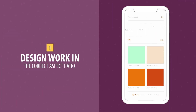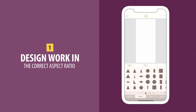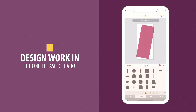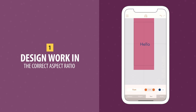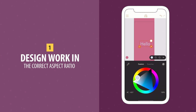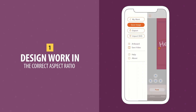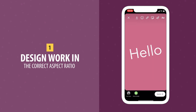Number 1. With Assembly you can design your composition in the correct aspect ratio for Instagram Stories, which is 16 by 9 vertical. Just head over to your canvas sizes and tap on device. This will mean there's no more re-scaling to fit into your Stories.